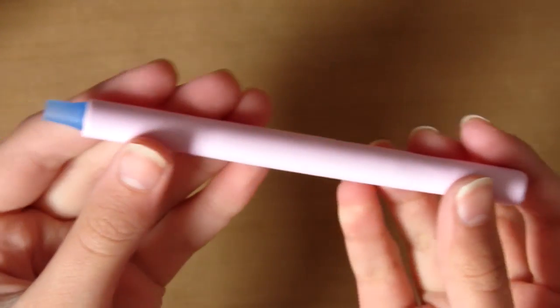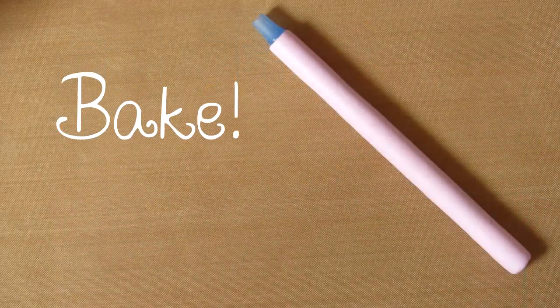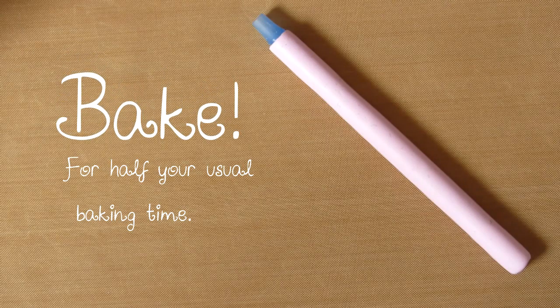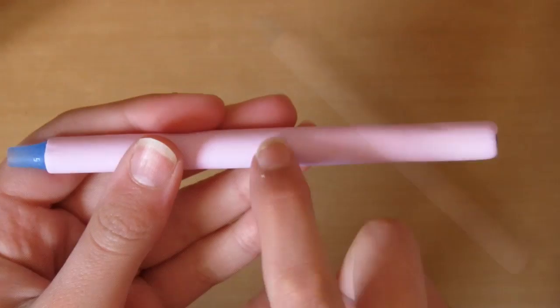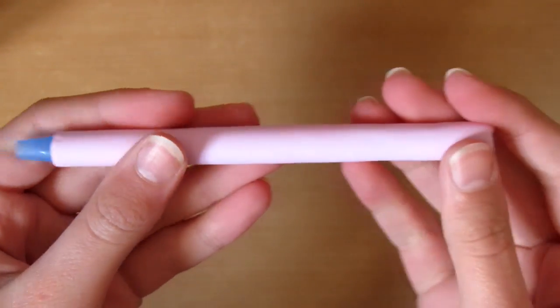And then you want to bake this for your usual baking temperature but for half the time, as we will be baking this again, so make sure to only do it for half your usual baking time. And then when it's out of the oven it should look like this.